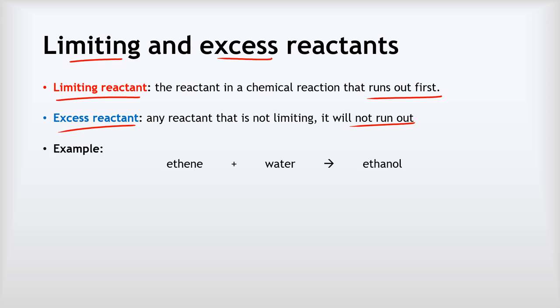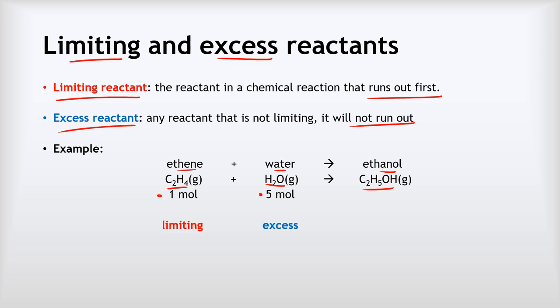For example, if we look at the reaction of ethene and water to make ethanol — C2H4 + H2O making C2H5OH — if we had one mole of C2H4 and five moles of water, the ethene would run out first and there'd be plenty of water left over. So we can describe the ethene as being limiting and the water as being present in excess.